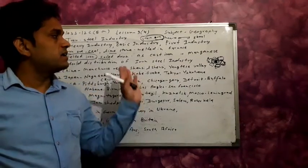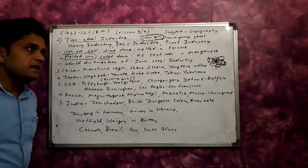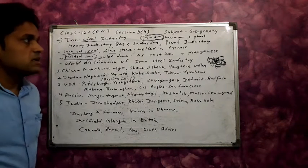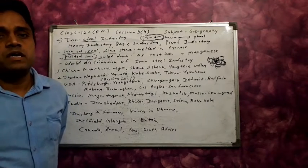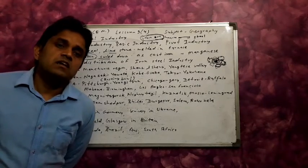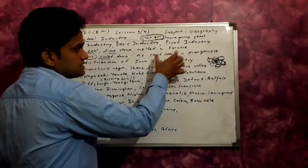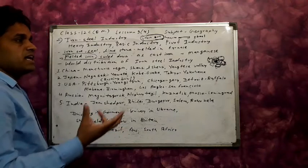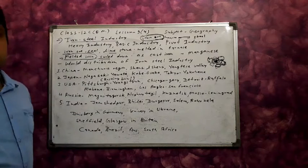When the melted iron cools, it is known as cast iron. Then different minerals like manganese are mixed into the cast iron in different amounts, producing different types of steel. Different types of steel are manufactured through this mixture of cast iron and manganese.